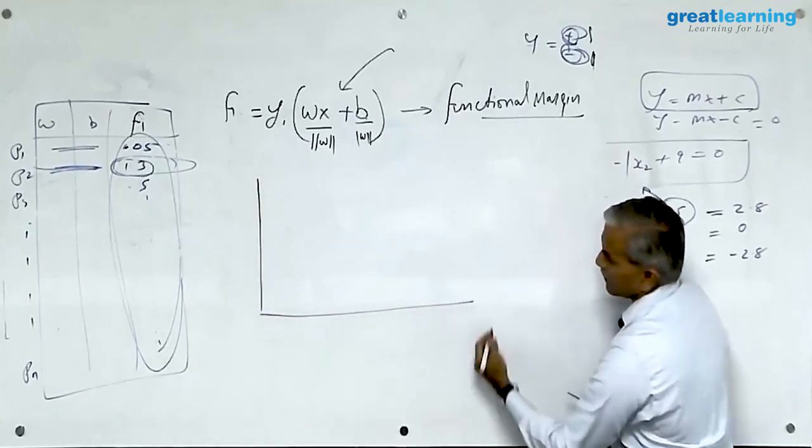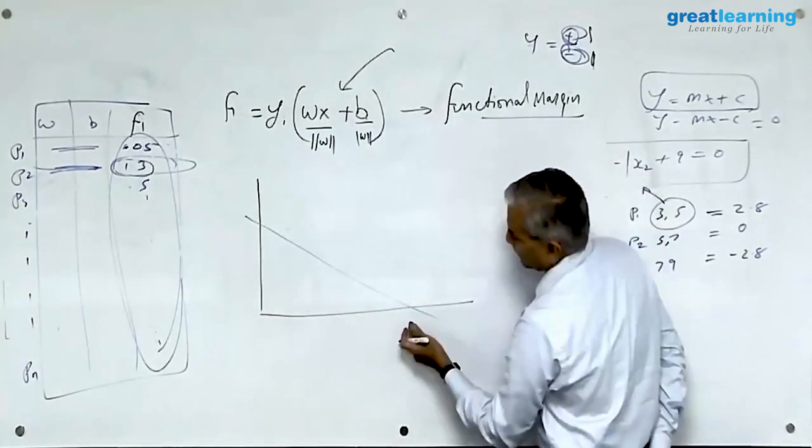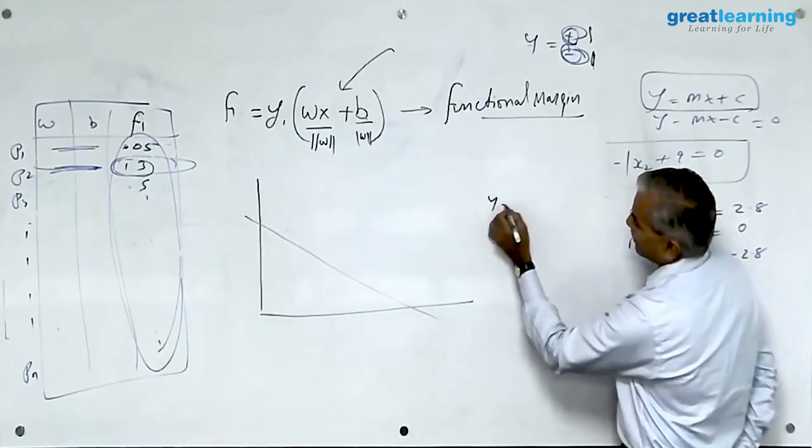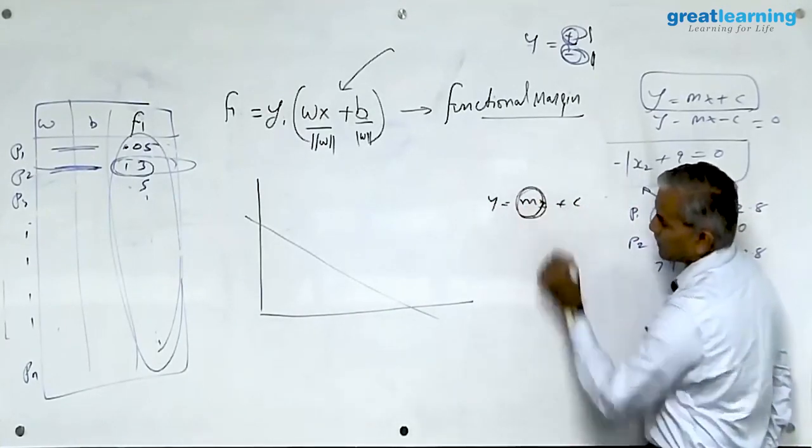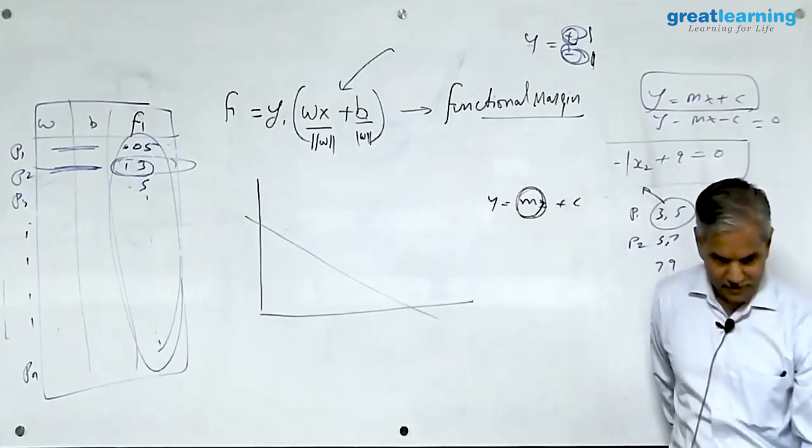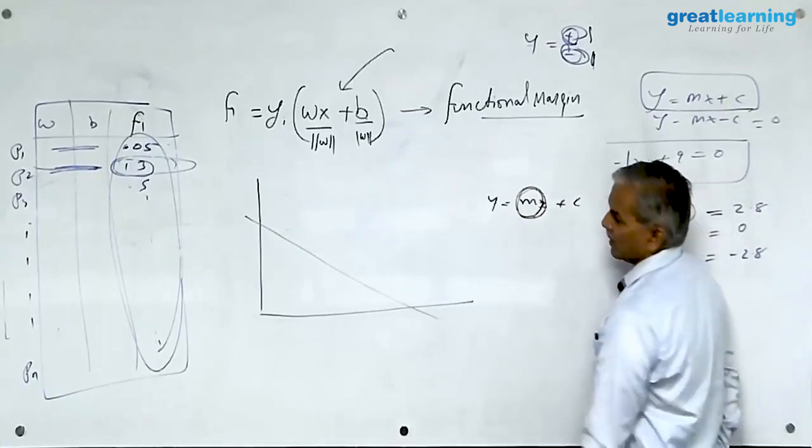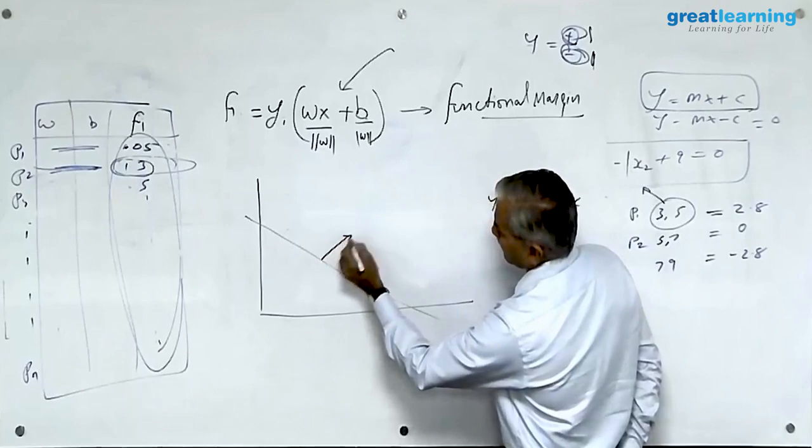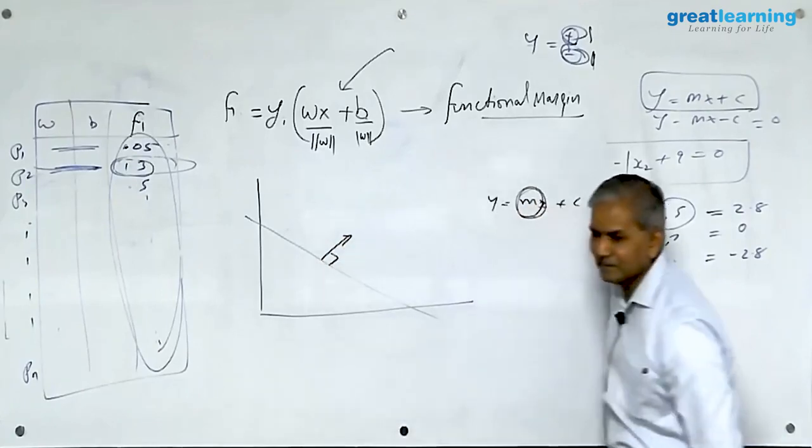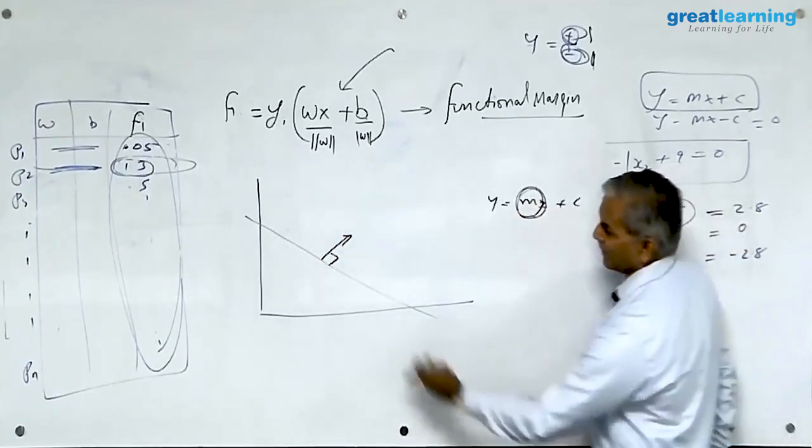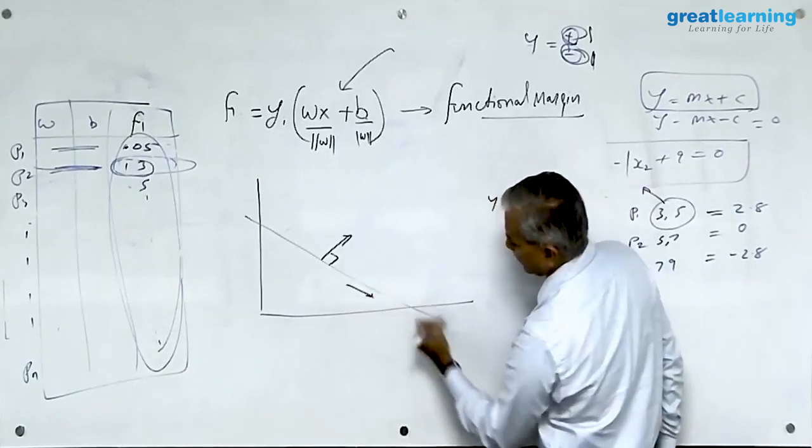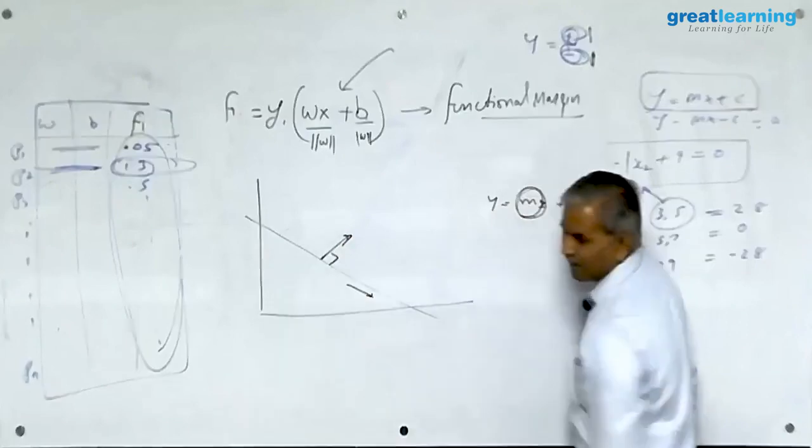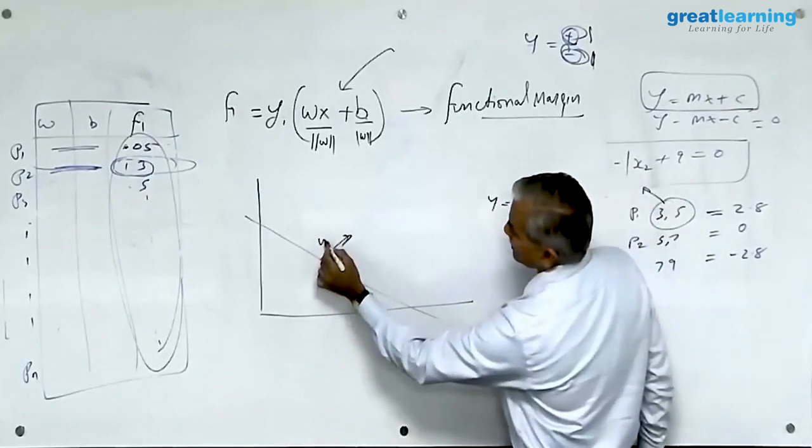I need to explain this to you. Whenever you have a line, you know the slope of the line y equal to mx plus c. This slope geometrically is a vector which is perpendicular to this line. Whenever you have a line or a plane there are two vectors associated with it, one is called directional vector, one is called normal vector. This normal vector is w.